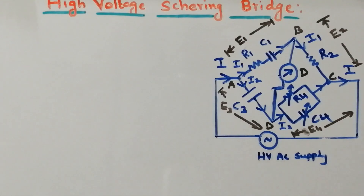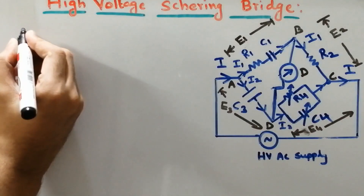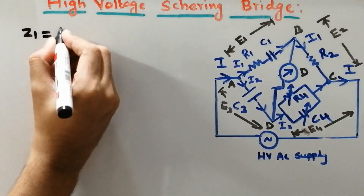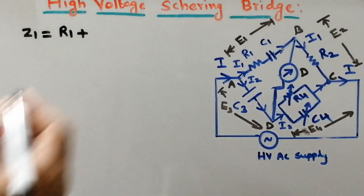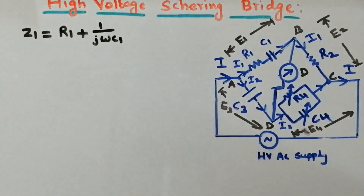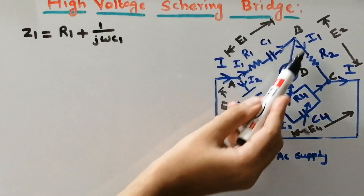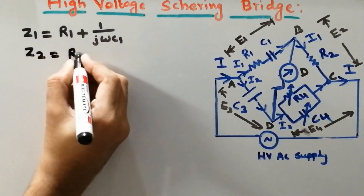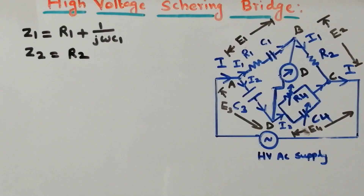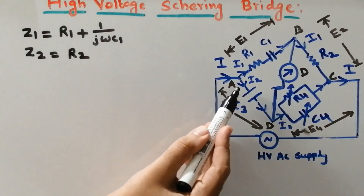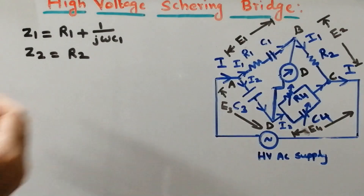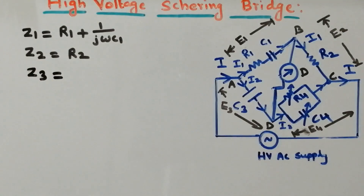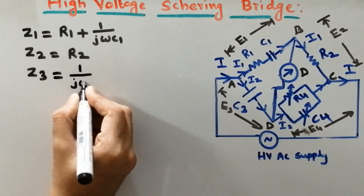Now let us consider the impedance of each arm. Let us note down the values of respective impedance for particular arms. The impedance of the first arm AB, I will represent as Z1. Z1 is equal to R1 plus 1 by jωC1. Similarly, the impedance of the second arm BC is represented as Z2. Z2 is equal to R2, because there is no reactance — only the resistance part is available. Similarly, the impedance of arm AD is denoted Z3. Z3 is equal to 1 by jωC3.